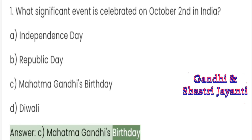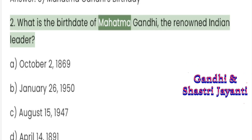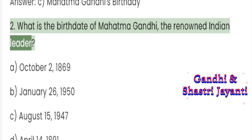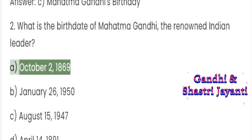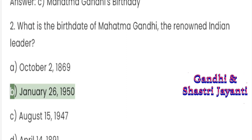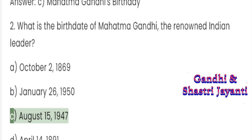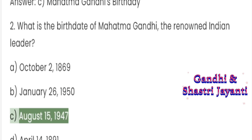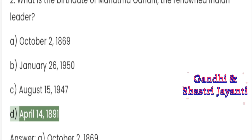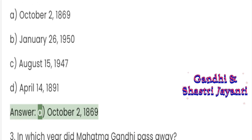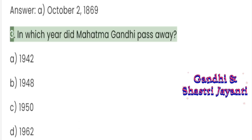Question 2: What is the birth date of Mahatma Gandhi, the renowned Indian leader? A. 2nd October 1869. B. 26th January 1950. C. 15th August 1947. D. 14th April 1891. Answer: A. 2nd October 1869.